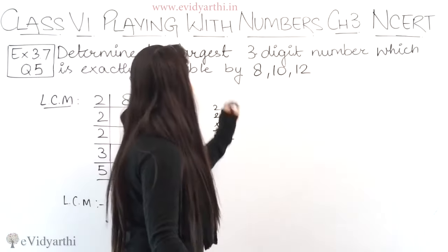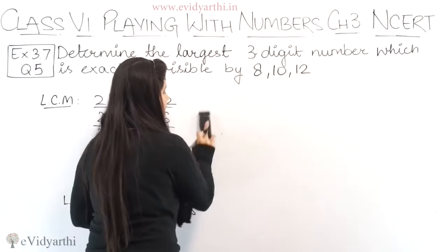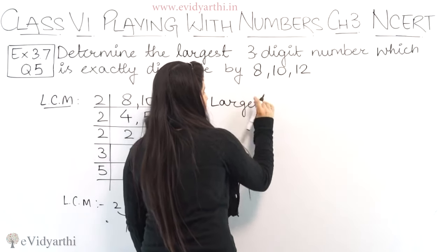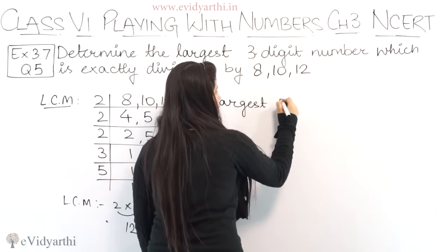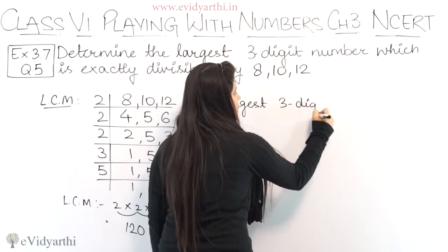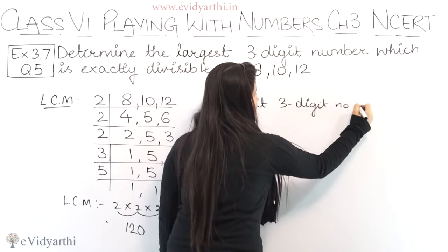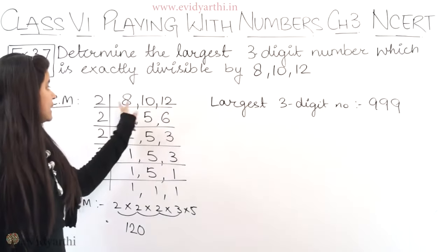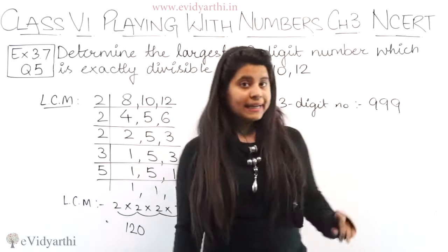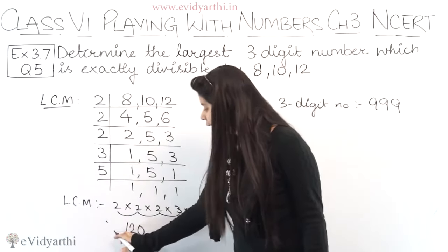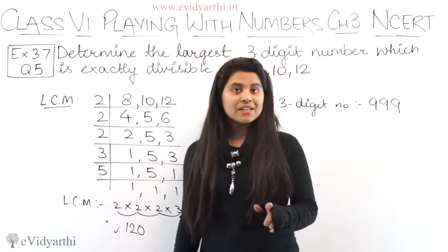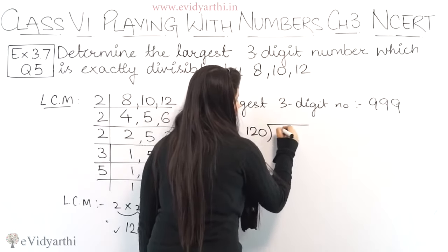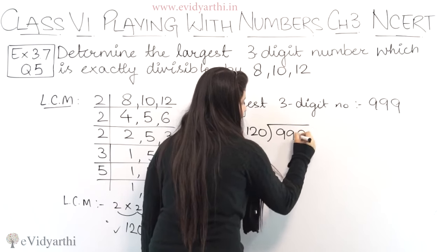Now let's come back to what is given in the question — the largest 3-digit number. What's the largest 3-digit number? The largest 3-digit number is 999. So we need to check whether 999 is divisible by all three numbers. To check that, we will see if 999 is divisible by 120. So we will divide 999 by 120.